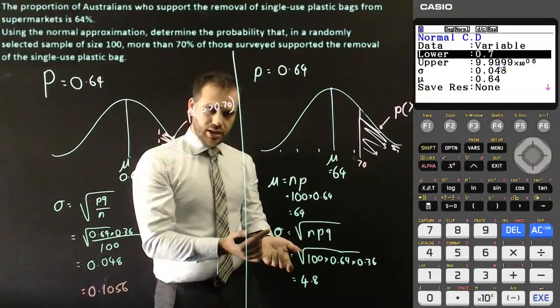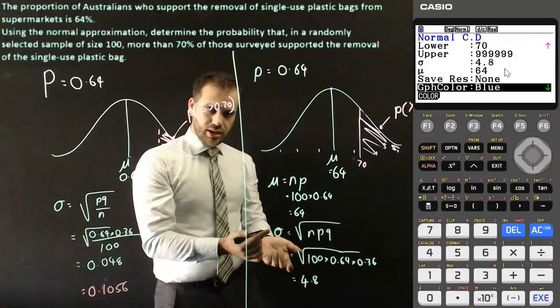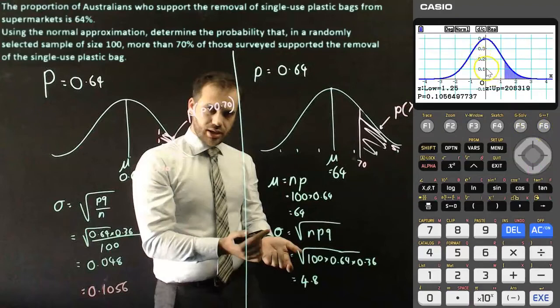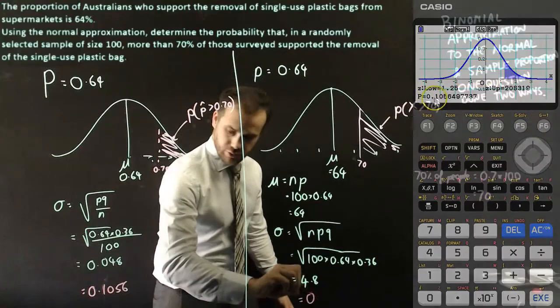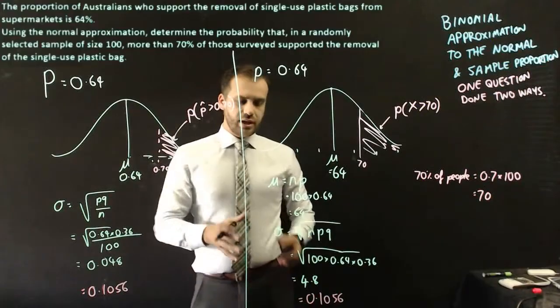If I type that into my calculator, and now we're doing our alternative method. Our lower of 70. An upper of an incredibly large number. Standard deviation, this time of 4.8. And a mean of 64. And we can now draw that. And lo and behold, same answer. 0.1056.